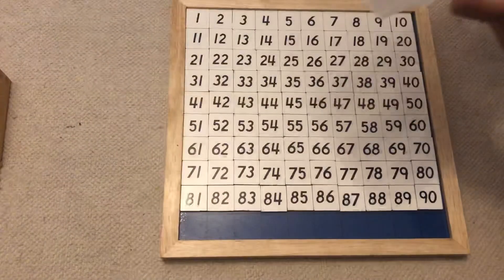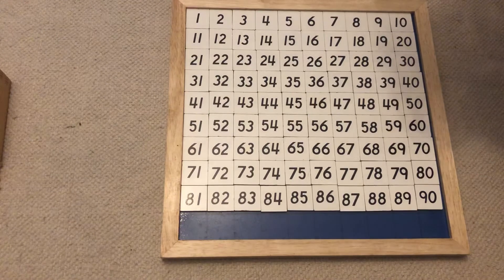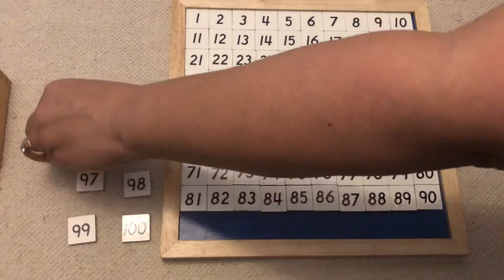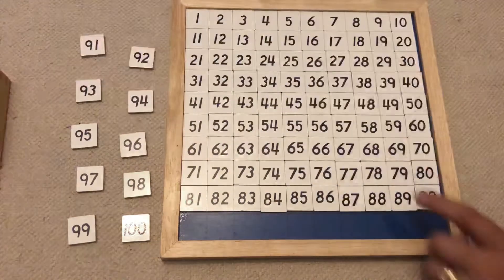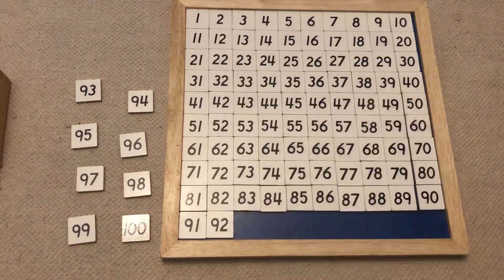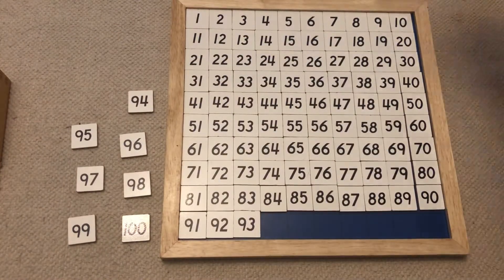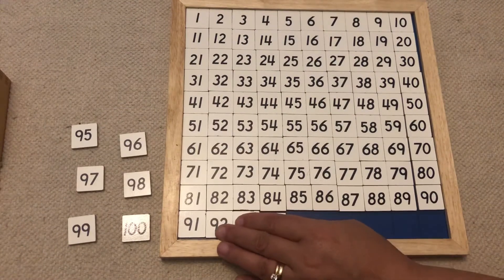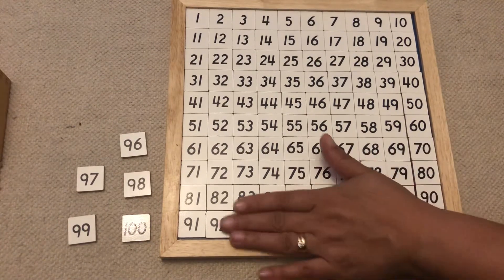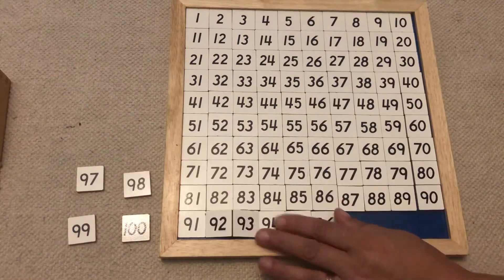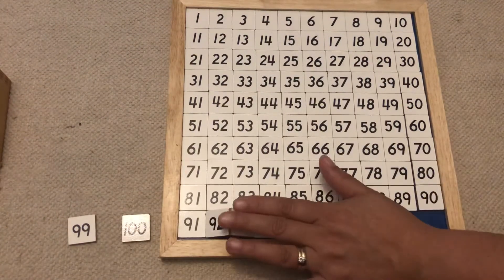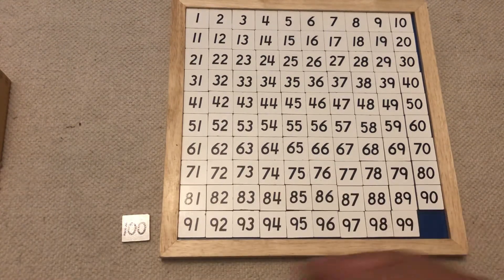Last row. This is exciting. After 90 comes 91, 92, 93, 94, 95, 96, 97, 98, 99, 100.